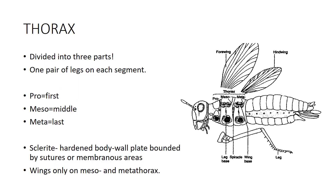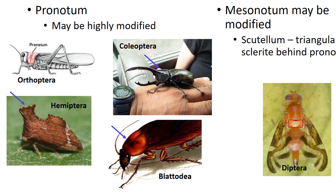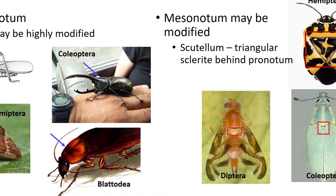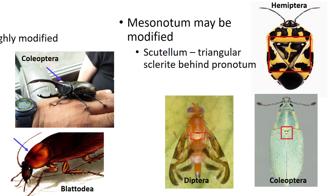The insect thorax is divided into three parts: the prothorax (pro means first), mesothorax (meso means middle), and metathorax (meta means last). Each segment consists of hardened plates or sclerites. Dorsal sclerites are called nota (or notum when singular), lateral sclerites are called pleura (or pleuron when singular), and ventral sclerites are called sterna or sternum. Each of these three thoracic segments contain one pair of legs. Wings are found only on the meso and metathoracic segments. The pronotum is the dorsal sclerite of the prothorax, which can be highly modified in various groups such as Hemiptera, Blattodea, and Coleoptera. The mesonotum may also be modified into a scutellum—a triangular sclerite behind the pronotum—commonly seen in Hemiptera and Coleoptera. For true bugs, this is an identifying characteristic.